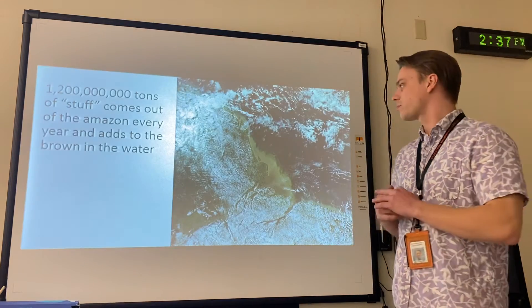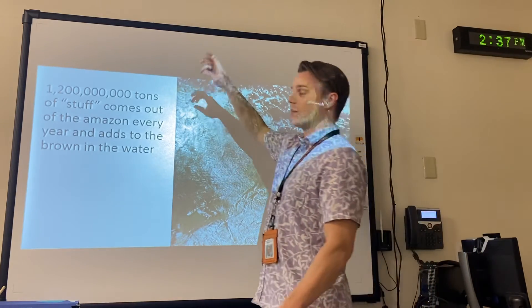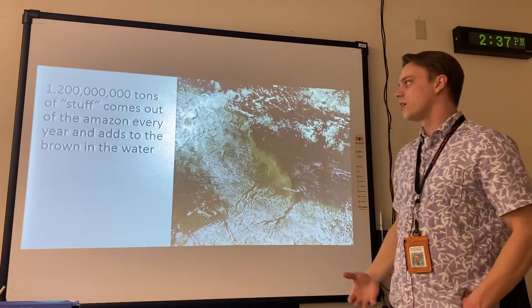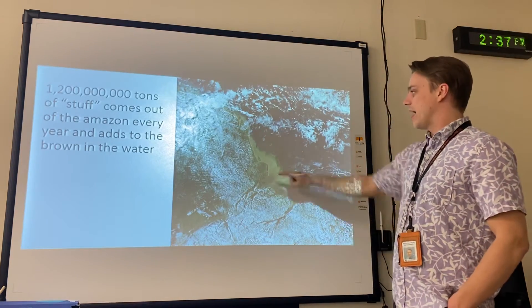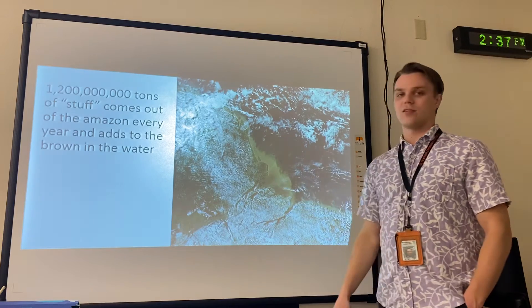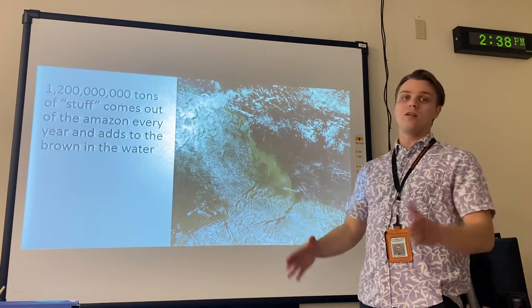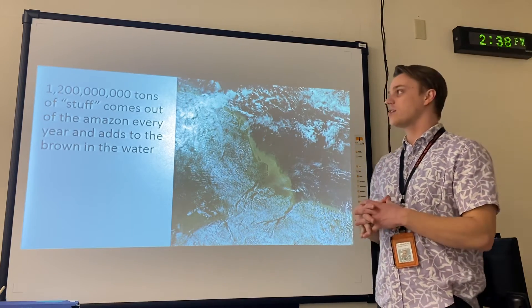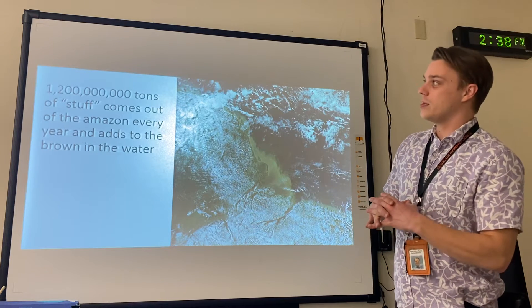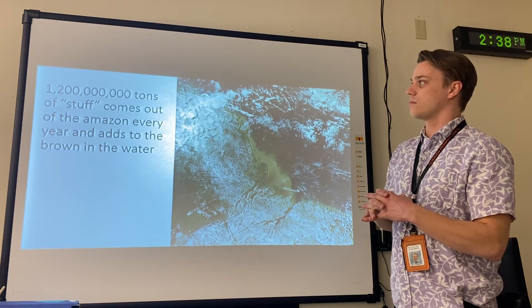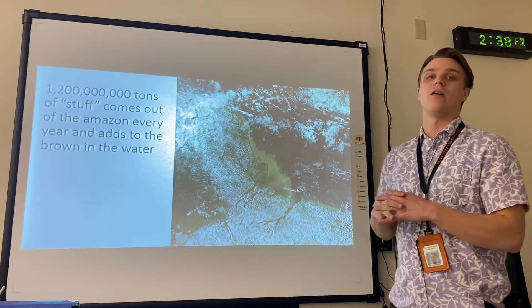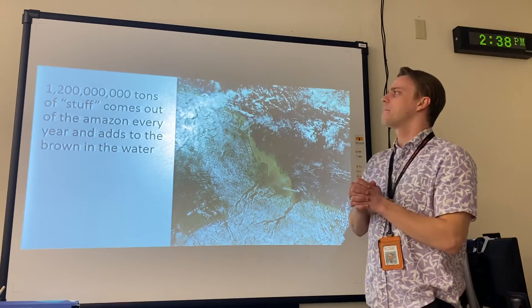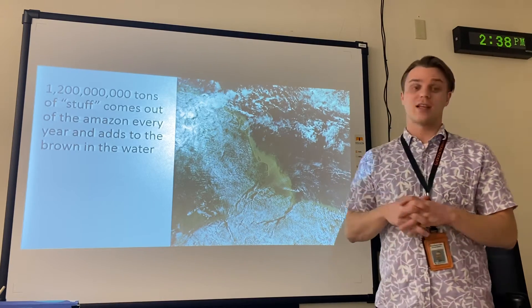What if I told you that 1,200,000,000 tons of stuff comes out of the Amazon River every year — and that's what this brown stuff is. So that brown stuff in the water is 1,200,000,000 tons of material. That's like 3 trillion pounds — about 3 to 4 trillion pounds of stuff coming out of the Amazon. That's a lot of stuff.